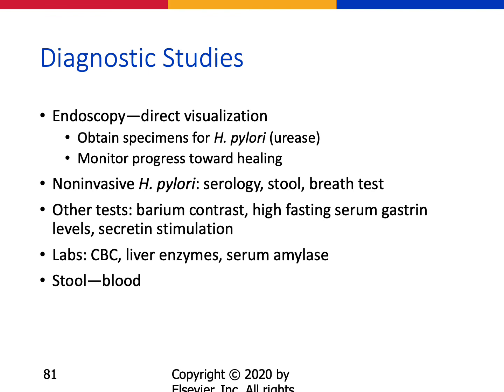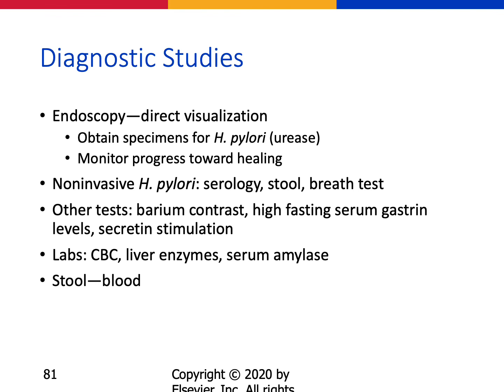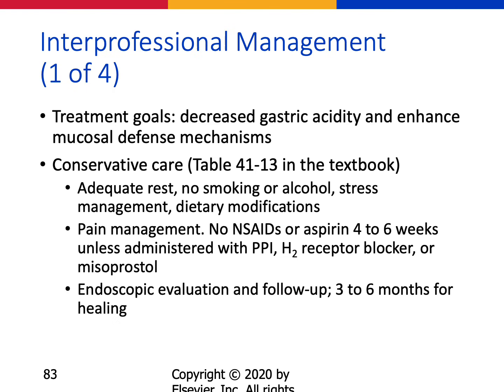Diagnostics include endoscopy — most ulcers and erosions are diagnosed with EGD or barium swallow — and specimens for H. pylori testing to determine the right antibiotics. Treatment goals are to decrease acidity and enhance the mucosal defense system, starting with conservative care: adequate rest, no smoking, no alcohol, stress management, dietary modification, and pain management. Then use PPIs and H2 receptor blockers to reduce acid.